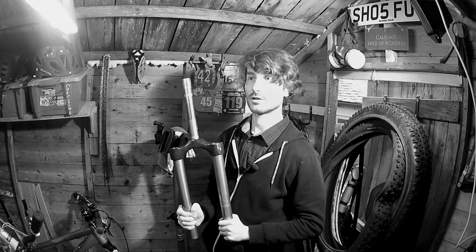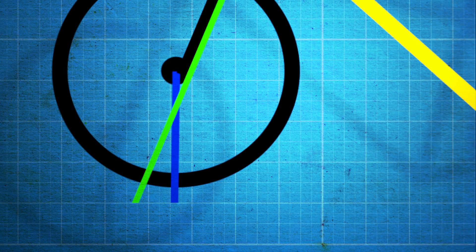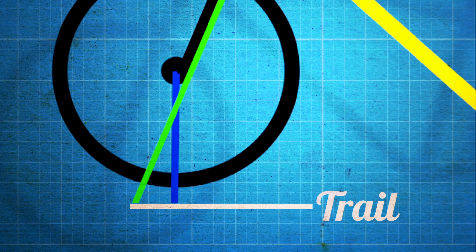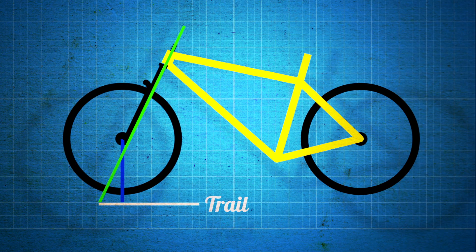The trail is the distance if you take your head angle line to the ground and draw a straight line vertically down to the ground from your hub axis — the distance between those two points is your trail. Think of these three elements as a triangle with trail as the base. If we affect either the head angle or the offset, we're going to affect how wide that base is.